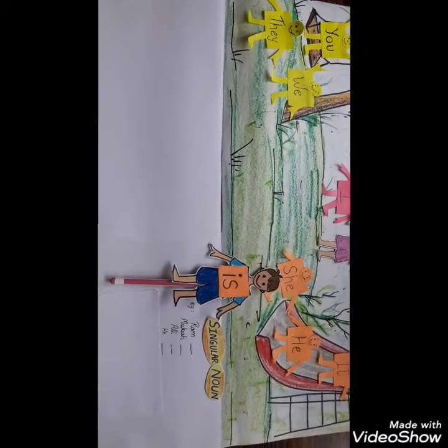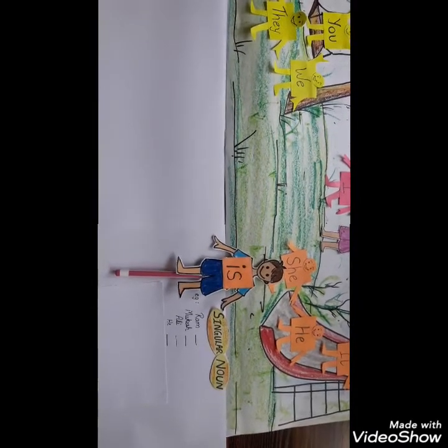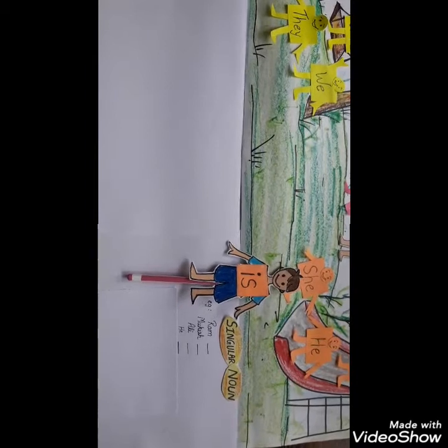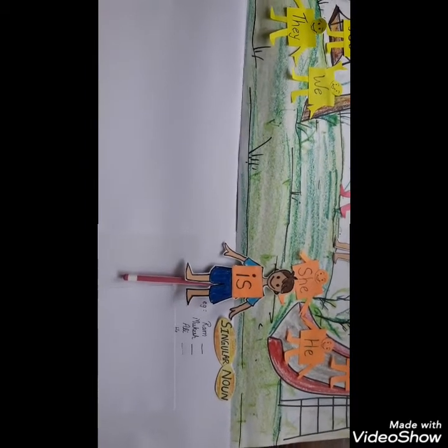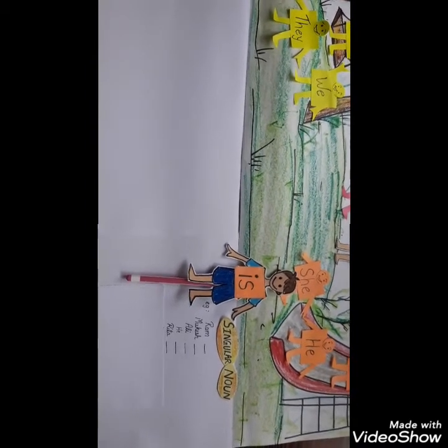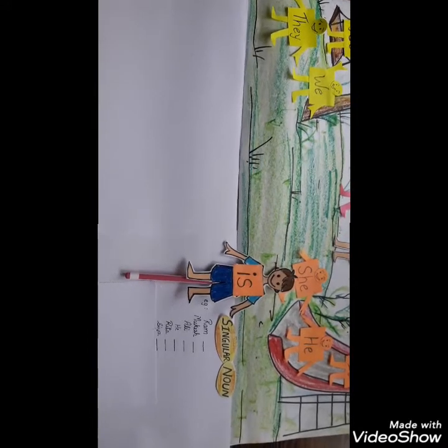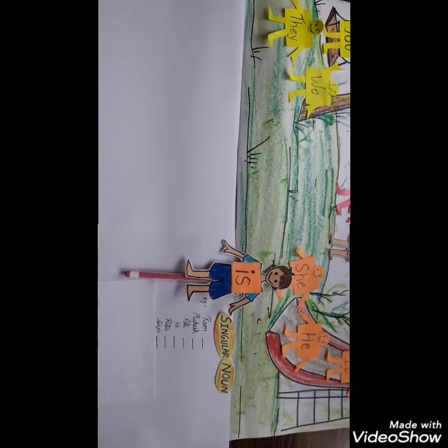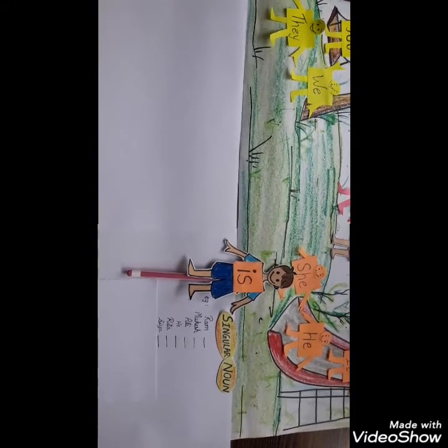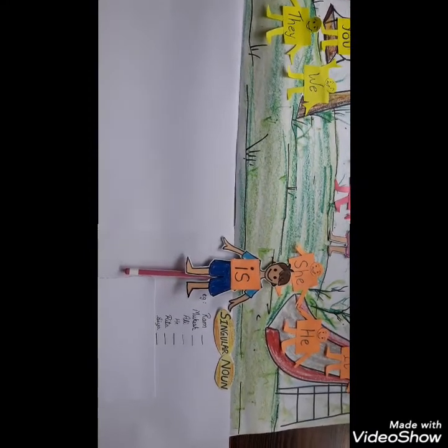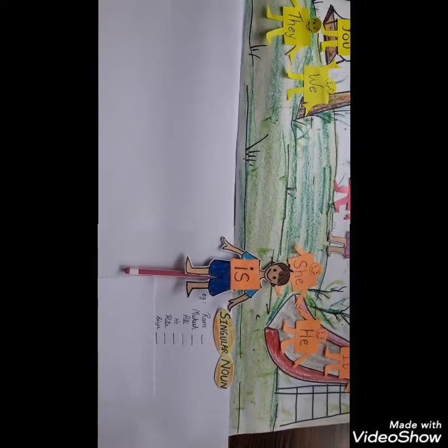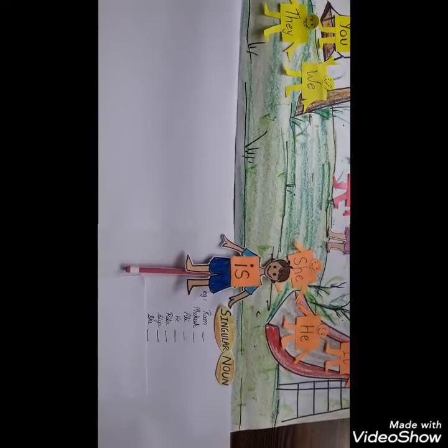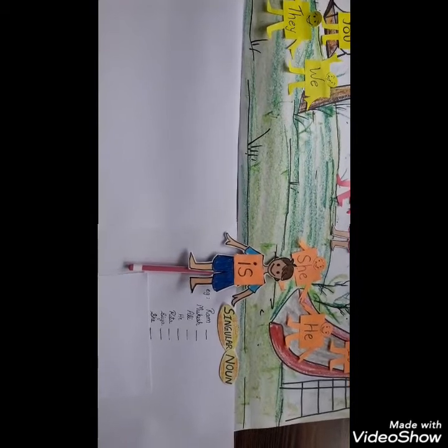Now singular nouns for she: Rita, Sia. They are names of girls. So we say Rita is, Sia is. So is is used with she. She is, she is.